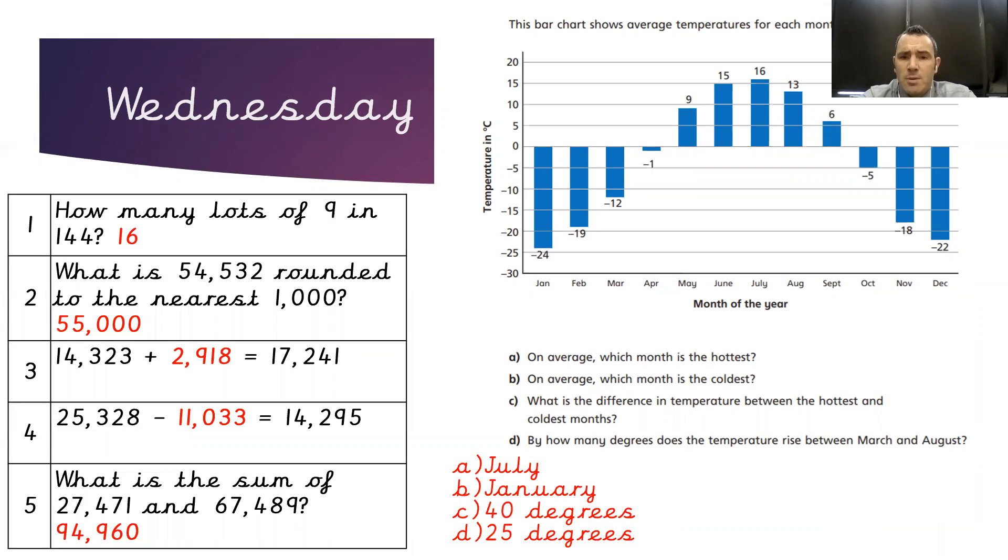To work out the difference in temperature between the hottest and coldest months, we have to bridge through zero. So what we would need to do here, we would find the lowest and the highest temperatures, which are minus 24 and plus 16 degrees Celsius.